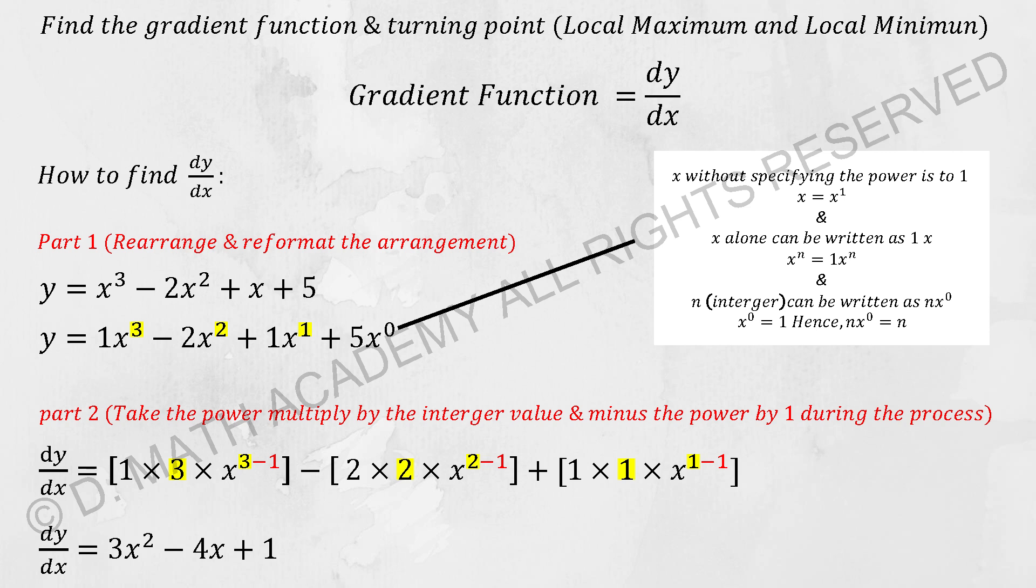Part two is the gradient function calculation. The first thing I did was to extract the power out to the front. So we have 1 times 3 times x to the power of 3. You're required to do some changes to the power since you extracted it out.